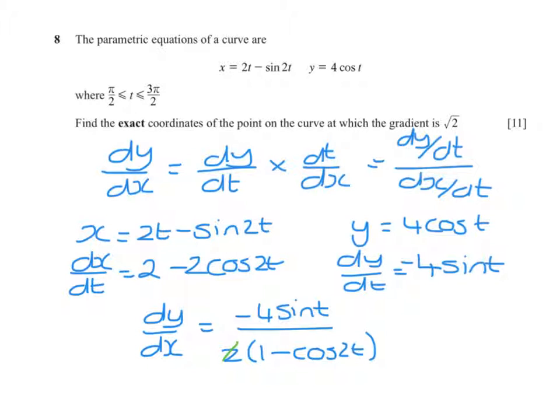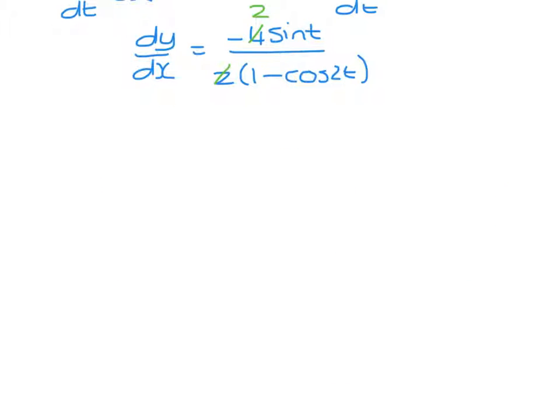Now we're told that the gradient equals root 2, so that equals minus 2 sine t over 1 minus cos 2t.